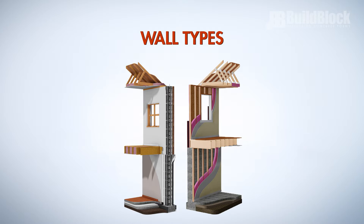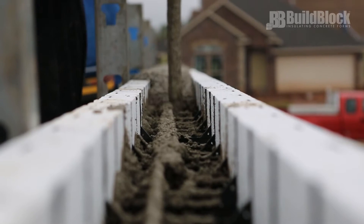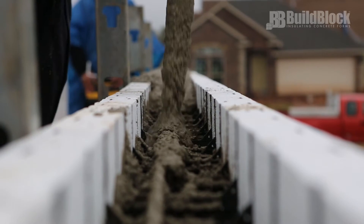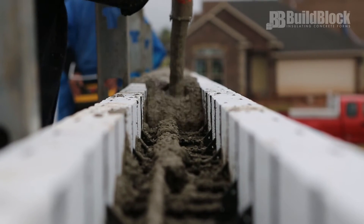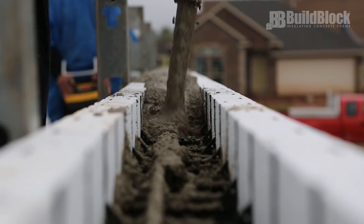It is also important to understand that ICFs create an insulated solid mass wall as opposed to a cavity wall that uses batt or fill insulation. The specific insulation requirements for mass walls are different because of their superior performance. Comply with code requirements and best practices for insulating your project.